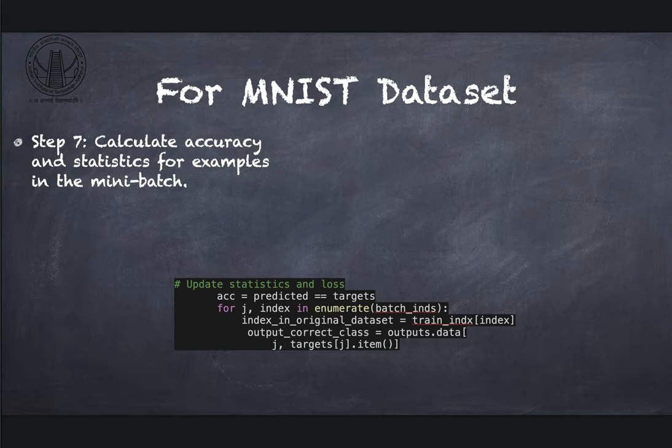Then you get the accuracy of each sample in the mini batch and compute the statistics. Computing the statistics means you first want to get the list of true and false for each of the examples where predicted and target are equal. Then iterate over the indices in the mini batch and get the index in original dataset which is not sorted by forgetting. This is the original indices of the dataset which was prior to the sorting. Then compute the misclassification margin and get the probability outputs for the correct expected class.